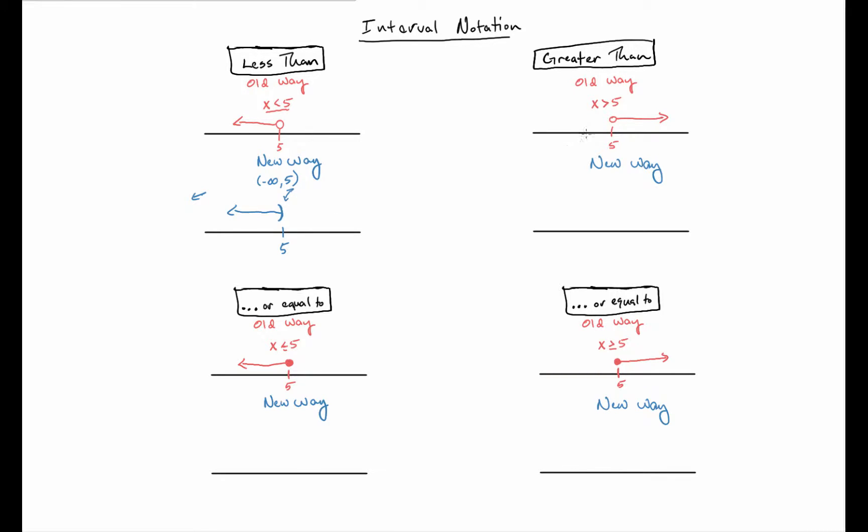Greater than is the same thing. I'm going to write five, use a parenthesis since it can't be equal to five, and go to the right this time. In this case, I'm starting at five and traveling to positive infinity. Just like we don't write a plus sign in front of the five, I'm not going to put a plus sign in front of the infinity sign either. So we got five to infinity.